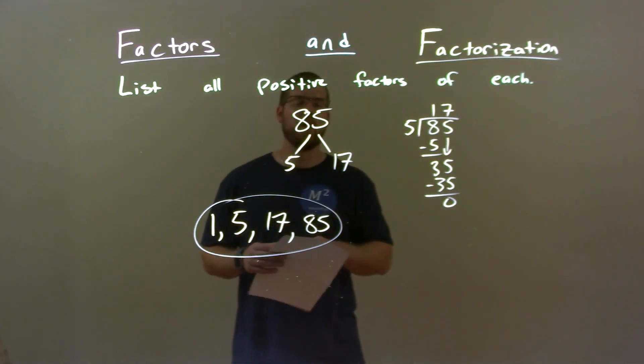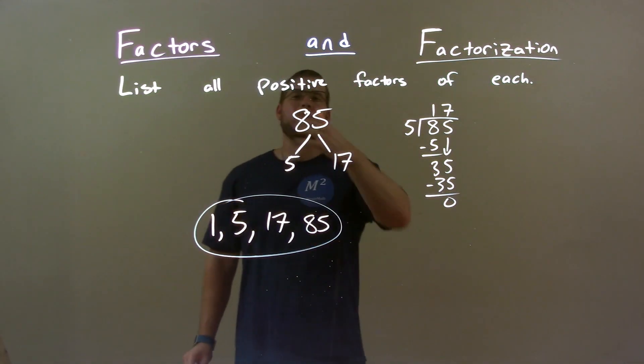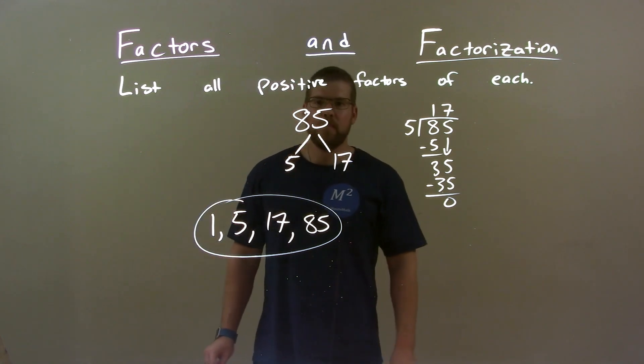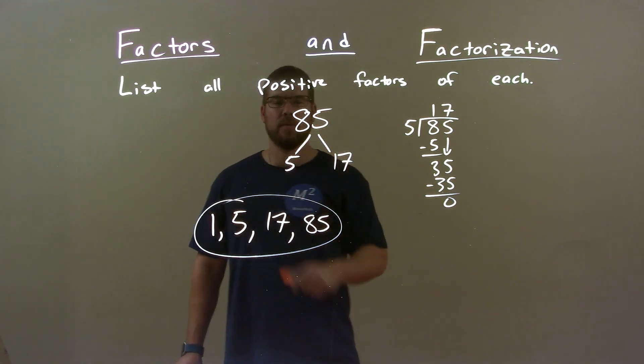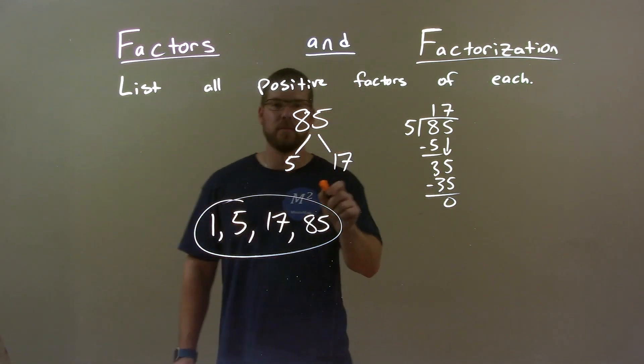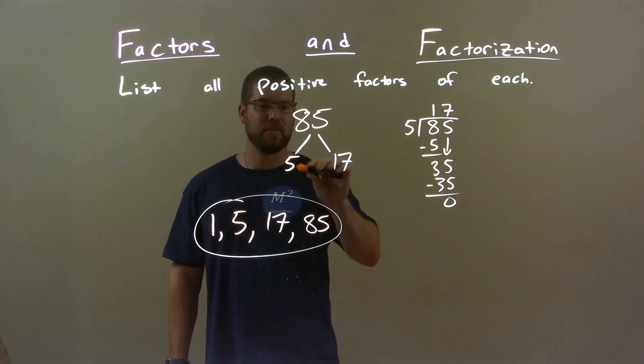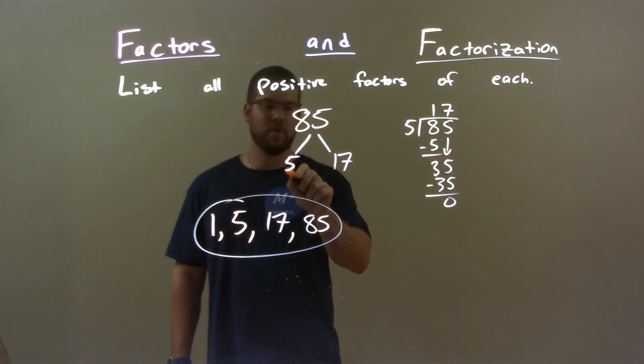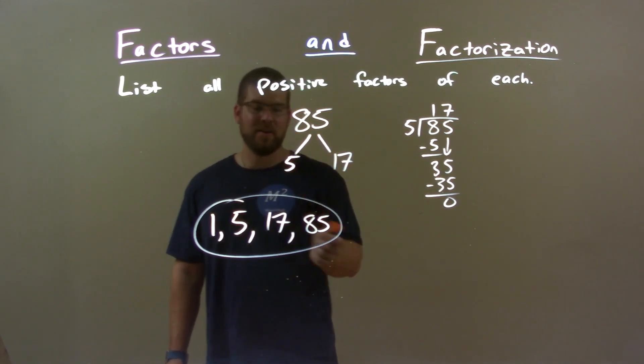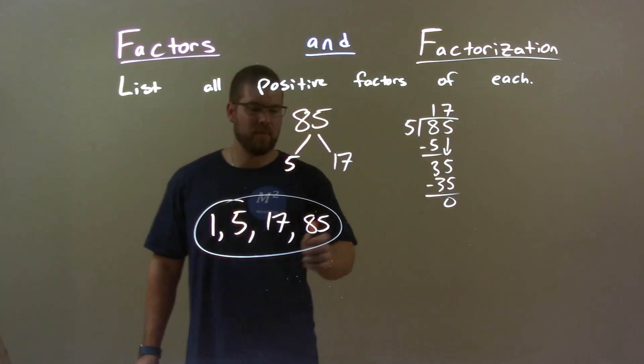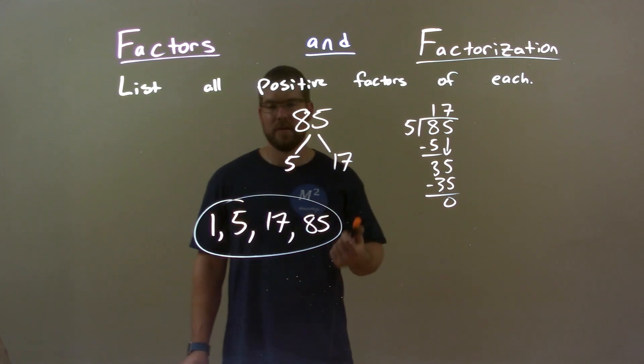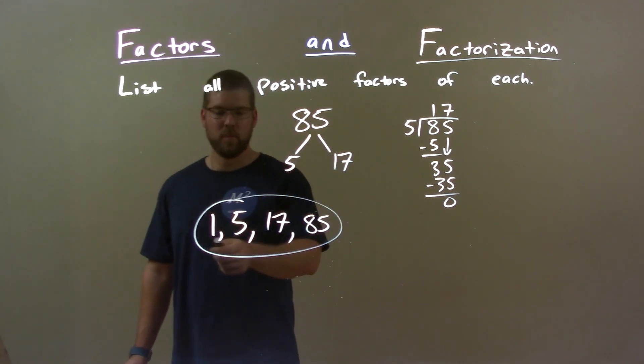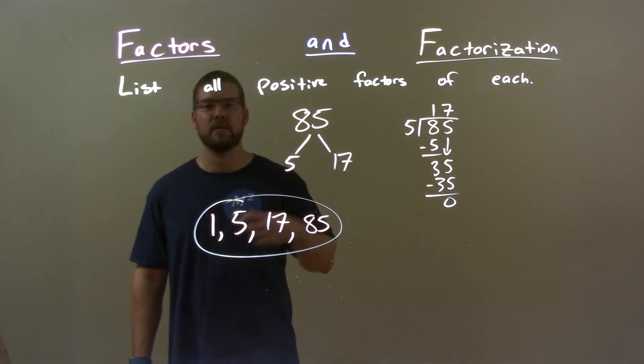So, quick recap. We're given eighty-five, and we have to find all positive factors of it. Well, I wrote down eighty-five to be five times seventeen, and those were the prime numbers. Then, when I compile my list, no other combination might multiply. Five times seventeen is eighty-five. With that there, I know there's nothing else. So, I have one, the number itself, our two prime numbers, and that's it. Our final answer: one, five, seventeen, and eighty-five.